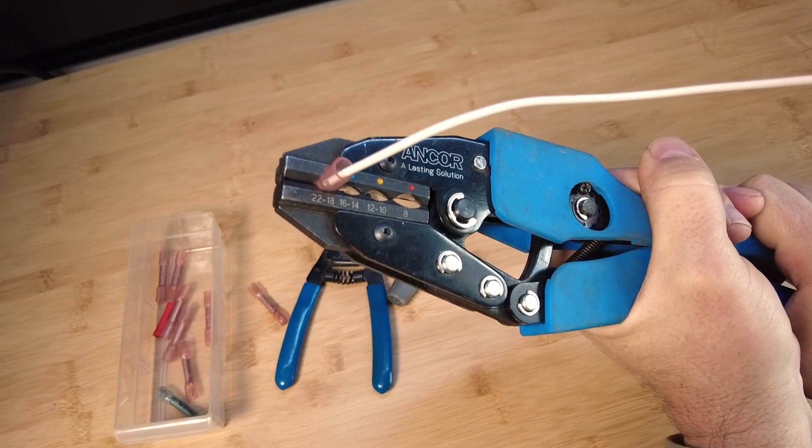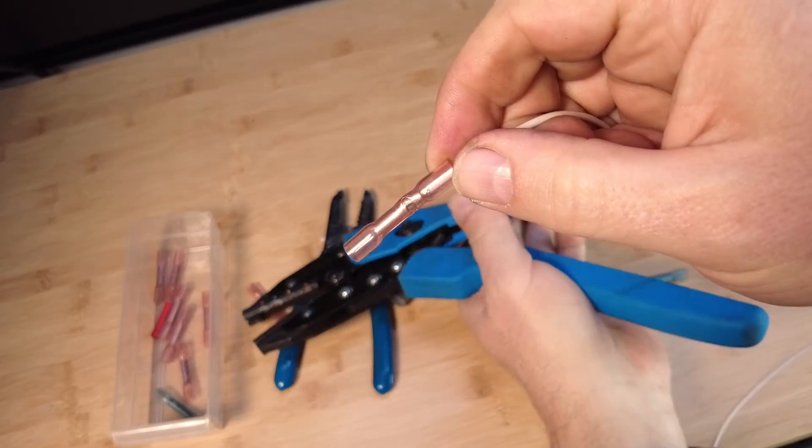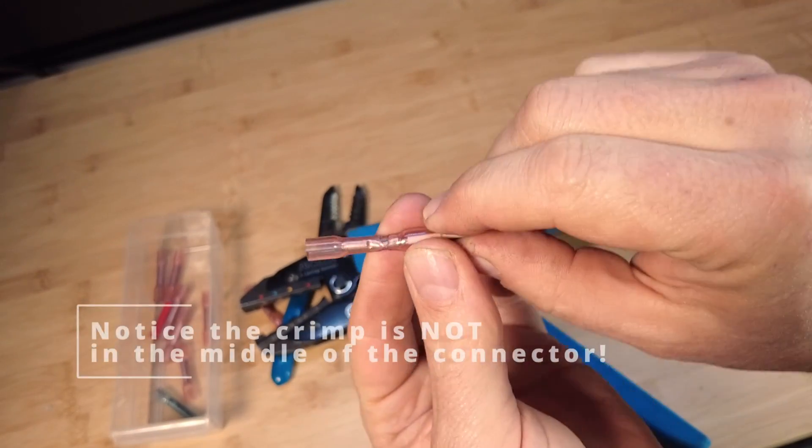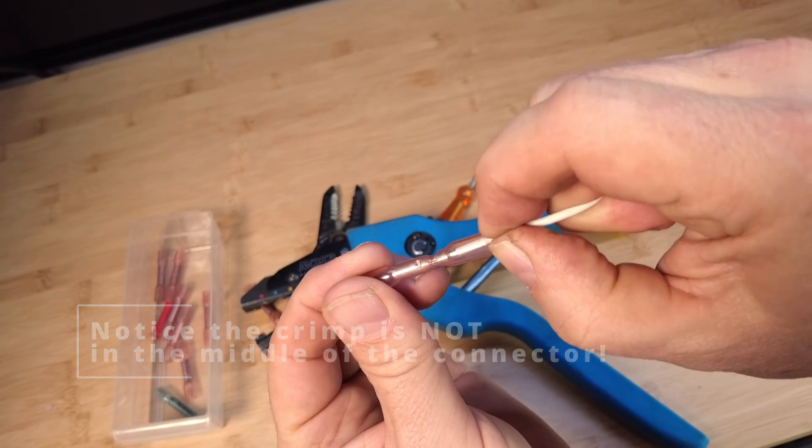Again, it won't let me over or under crimp it and then release. So there you go. There's your crimp. We didn't break through the casing, the insulation, and I can't easily pull it out.